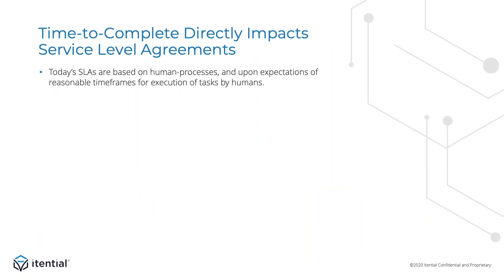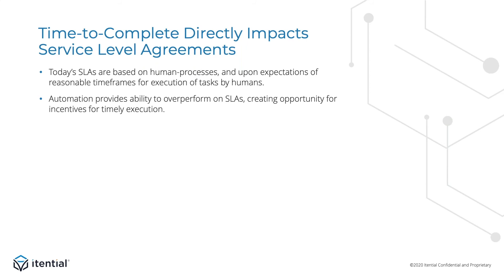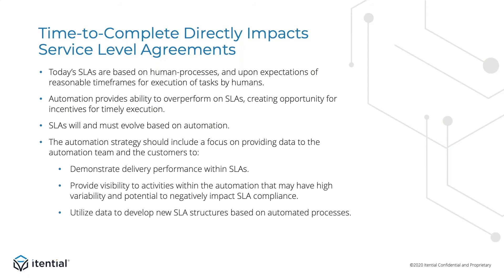Time to complete is closely connected to service level agreements. Today, SLAs are based on human processes with allowances for reasonable time frames for things like handoffs and idle time. Effective automation enables teams to significantly shorten the time to complete, meaning they can deliver their services well under their SLA. The automation team can look for opportunities to be incentivized for executing much faster than the SLA instead of worrying about being penalized for being late. As automation becomes more pervasive, SLAs will evolve on the expectation that automated processes should be delivered faster. Once this happens, it's going to be really important for automation teams to have the ability to capture performance statistics from the automation platform so they can demonstrate SLA adherence.